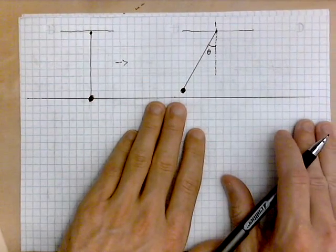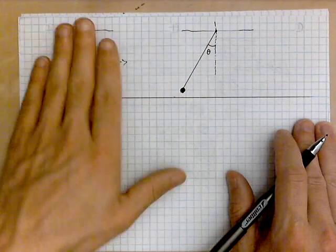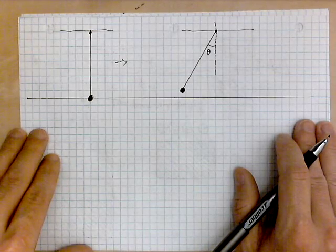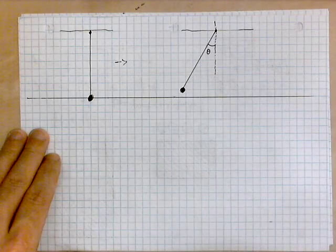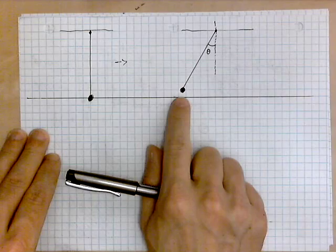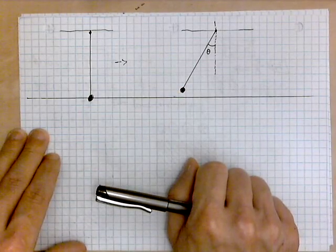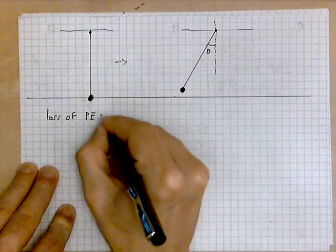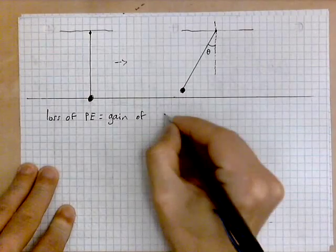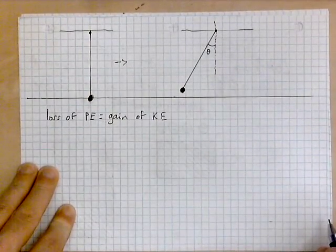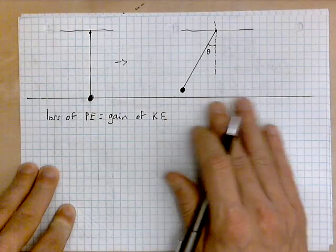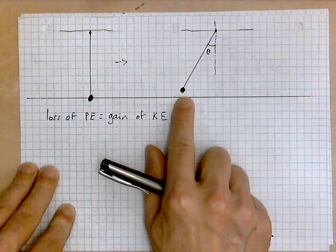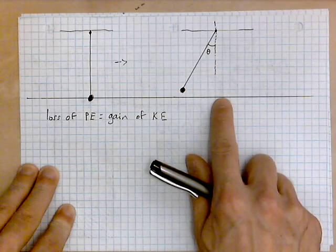We displace it an angle theta relative to the equilibrium. This is our angle theta. Now we will use the principle of conservation of energy, which states that whatever potential energy is lost as it swings back to the low point becomes the kinetic energy of the object. So loss of potential energy equals gain of kinetic energy.